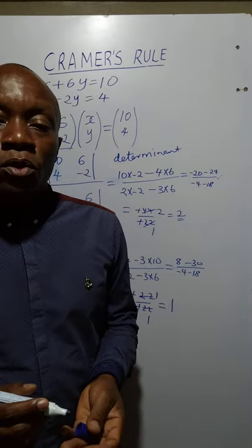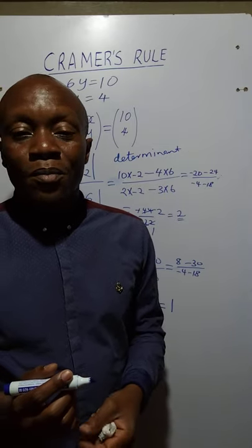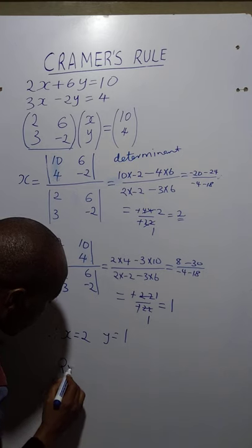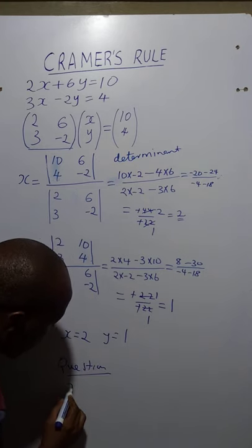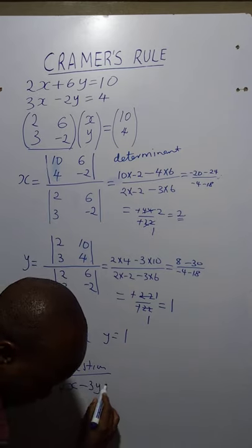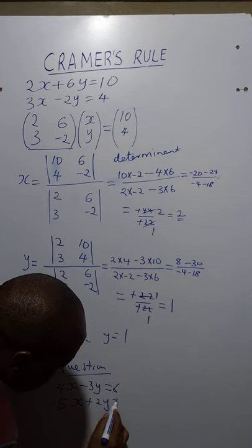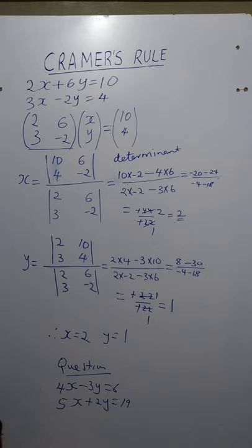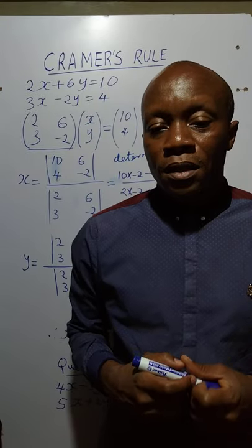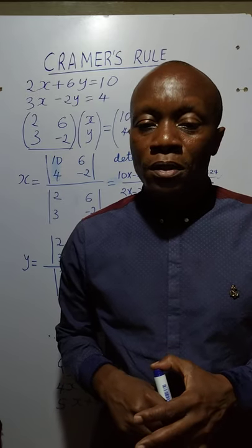That's how we use Cramer's rule to solve a pair of simultaneous equations. Now I want to give you a practice question: try 4x minus 3y equals 6, and 5x plus 2y equals 19, and write the answer in the comments section below. Thank you for watching — please like and share so your friends can also get this information. Have a nice day.